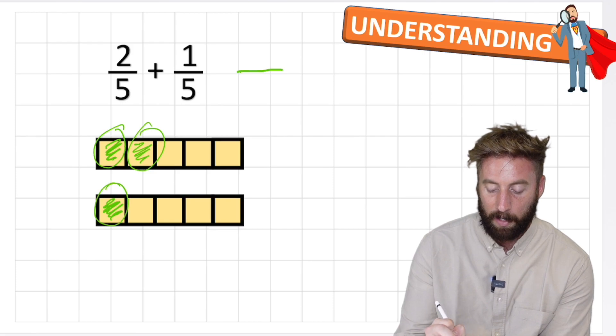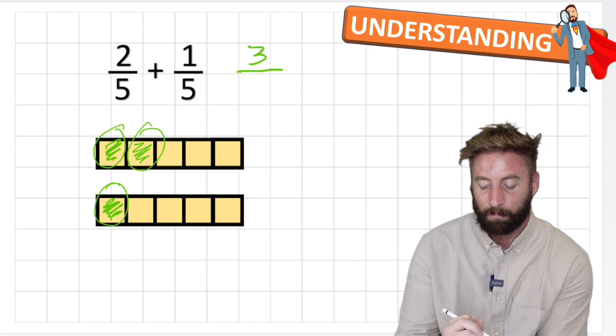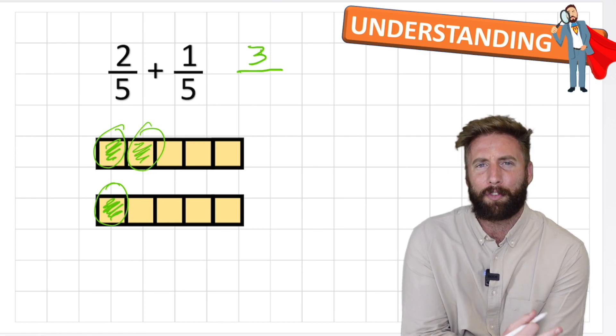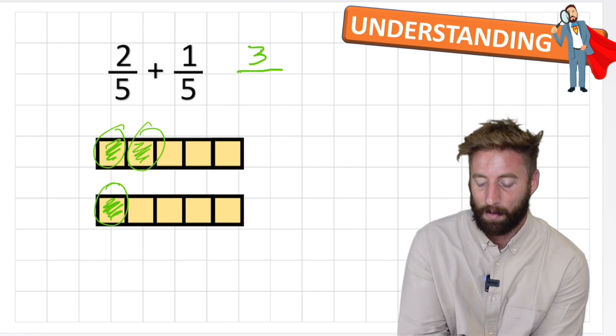three. So I have three. But I have three what? Three what? Three dogs? Three tenths? What?